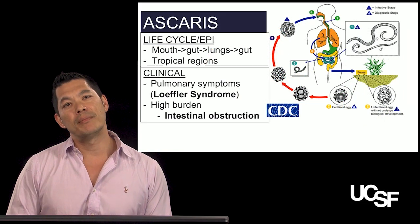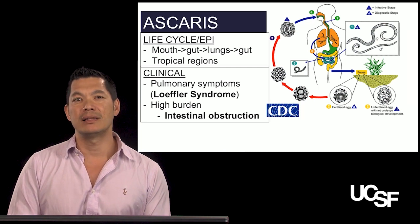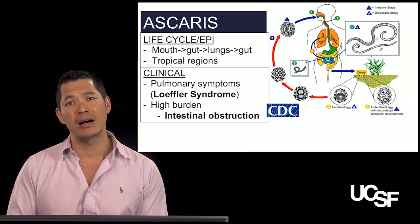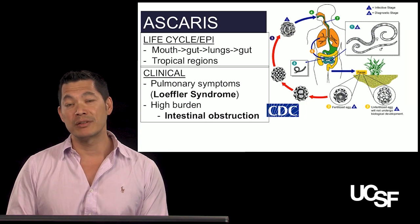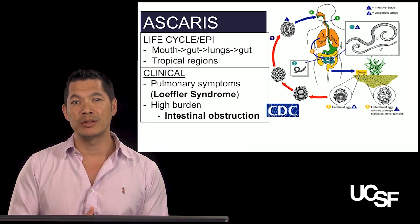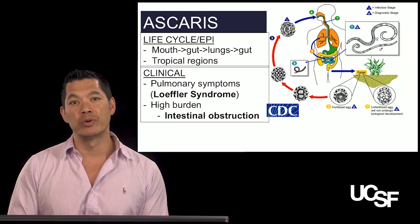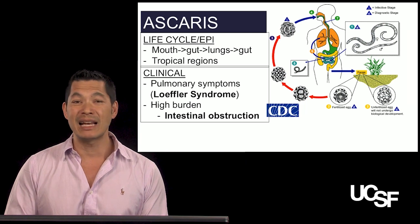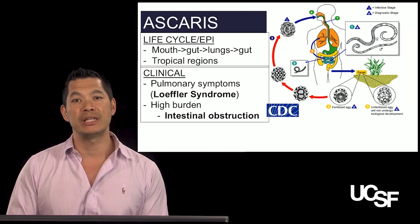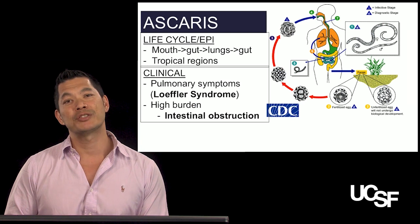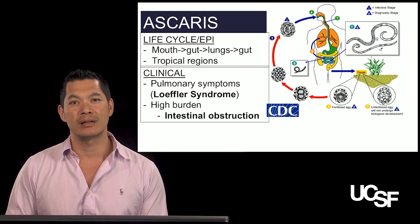How is Ascaris manifested clinically? The main problems are pulmonary symptoms — a syndrome called Loeffler syndrome — where you can get a constellation of dry cough, malaise, and eosinophilia, both through BAL diagnosis and peripheral eosinophilia. If you have a high burden of worms in the intestines, they can actually cause an obstruction — a GI obstruction syndrome. But most people are actually asymptomatic.